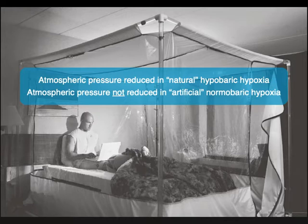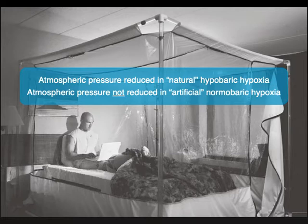Despite the distinction between artificial and natural hypoxia, both are effectively equivalent — you can still calculate and set the inhaled PO2. Partial pressure of oxygen is simply the percent O2 times total atmospheric pressure, and you can titrate those values to achieve the desired PO2. They haven't been compared directly, and there's really no reason to.